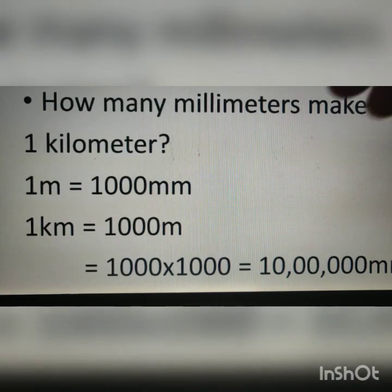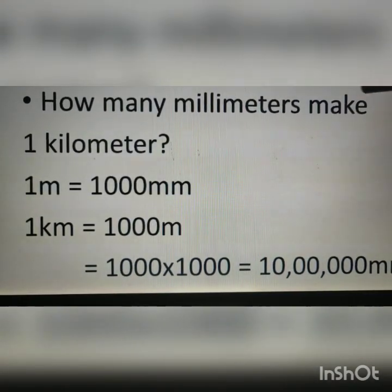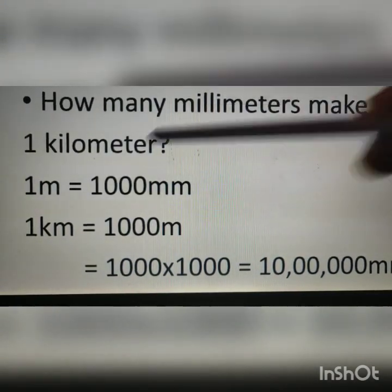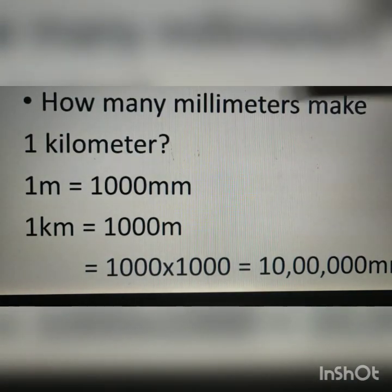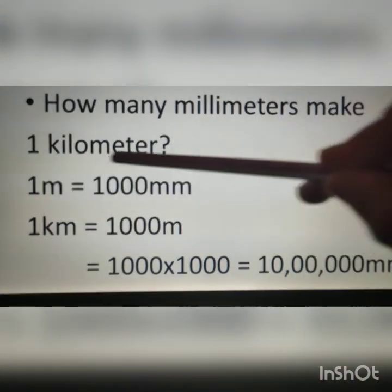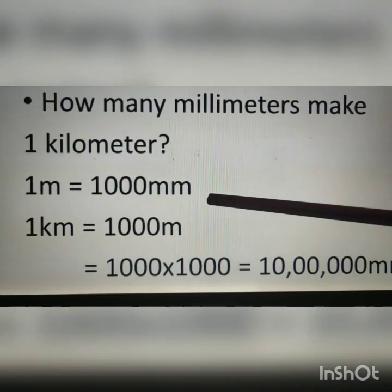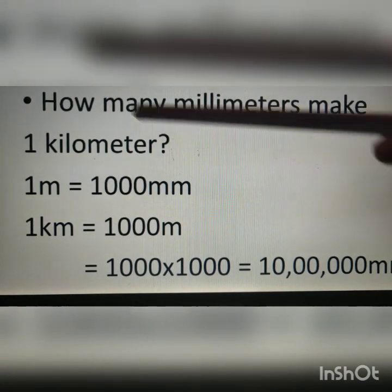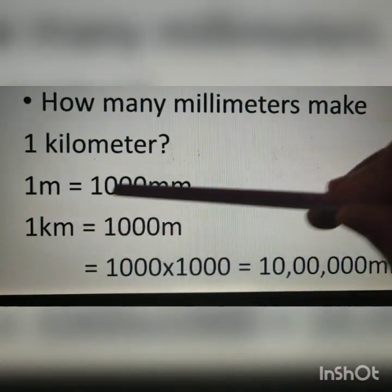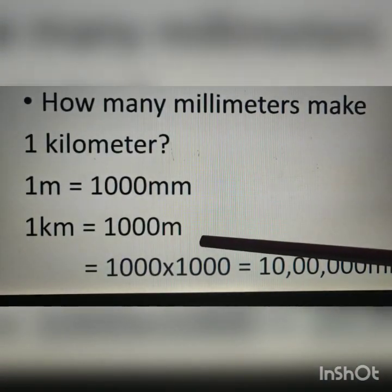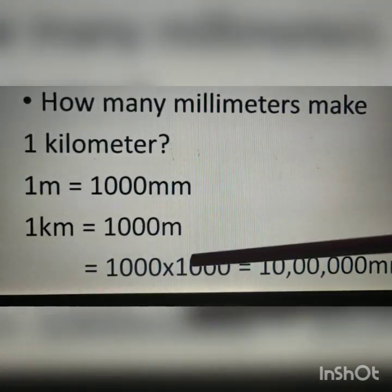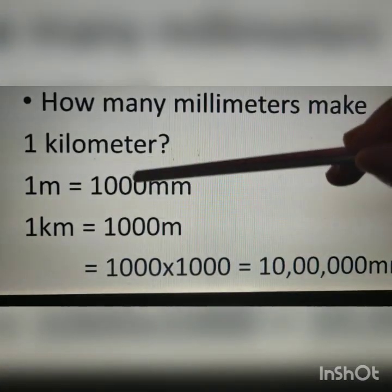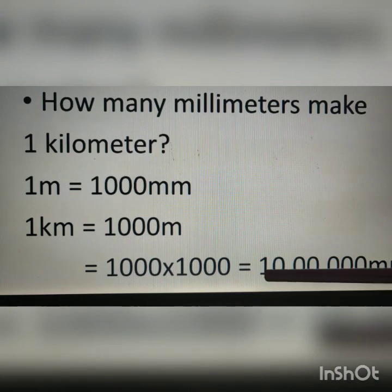Next question: how many millimeters make 1 kilometer? We know 1 meter is equal to 1000 millimeters and 1 kilometer is equal to 1000 meters. Therefore, 1000 multiplied by 1000 gives us 10,00,000 millimeters.